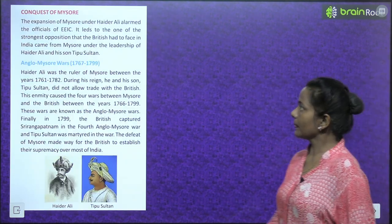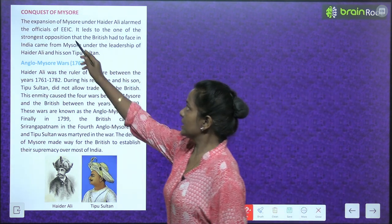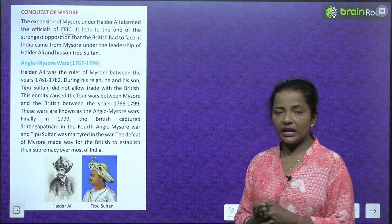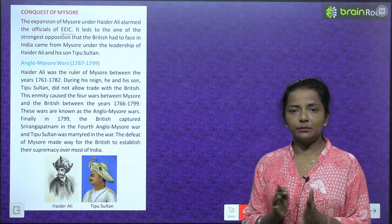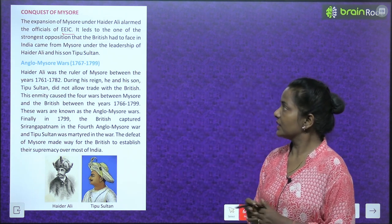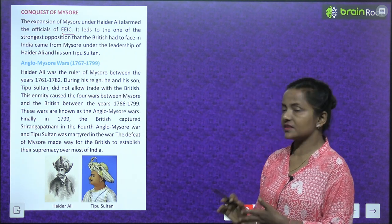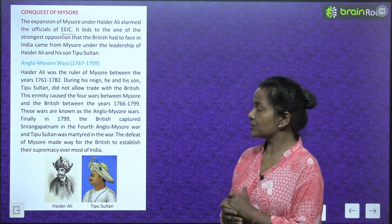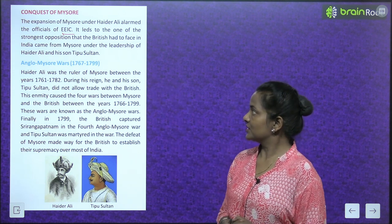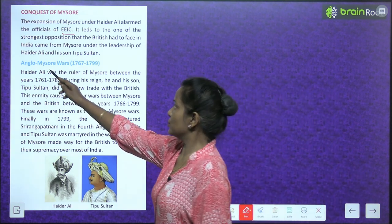Conquest of Mysore: The expansion of Mysore under Hyder Ali alarmed the officials of the English East India Company. It led to one of the strongest oppositions the British had to face in India, coming from Mysore under the leadership of Hyder Ali and his son Tipu Sultan.